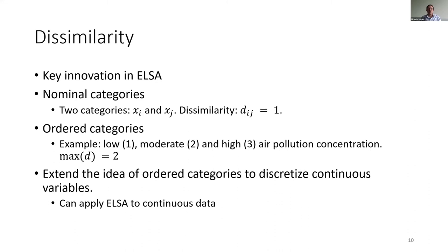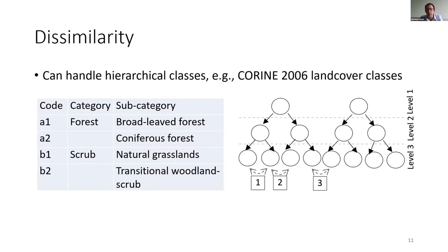One of the innovations of ELSA was the idea of how we work with categories. For nominal categories, dissimilarity is one. For ordered categories — ordinal data such as low, moderate, and high air pollution values — we have a maximum dissimilarity of two, and we can extend that toward discretising continuous data sets. So ELSA can also be applied to continuous data. We can also apply it to hierarchical classes — for example, two types of forest, broadleaved and coniferous, might be considered more similar to each other than coniferous forest and grassland, and we can handle that with this dissimilarity measure.